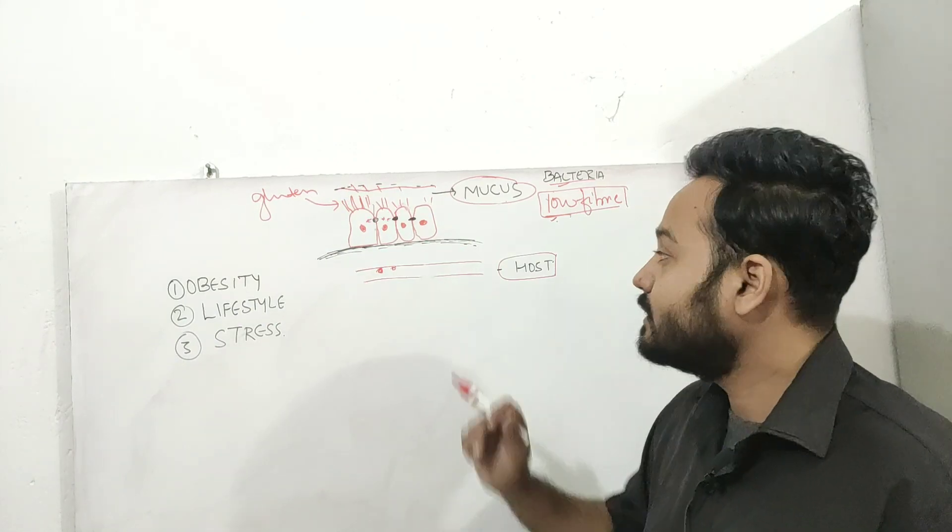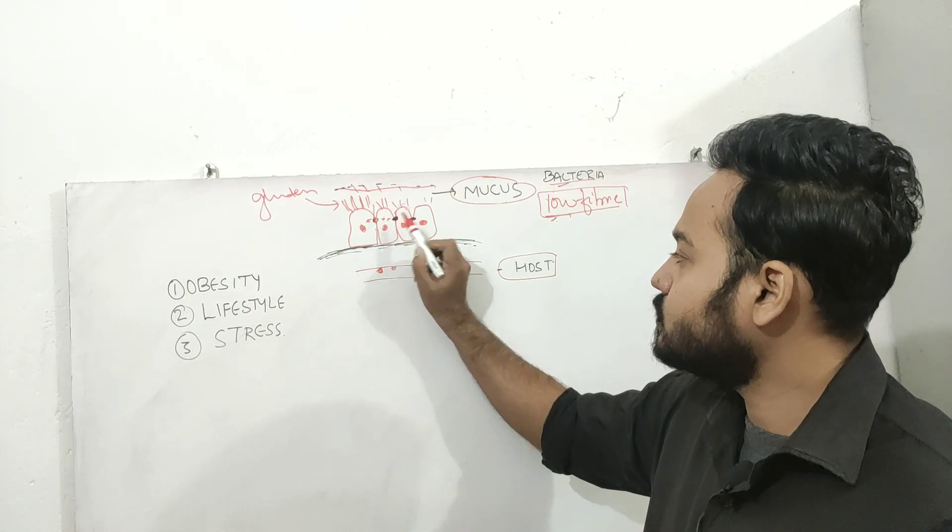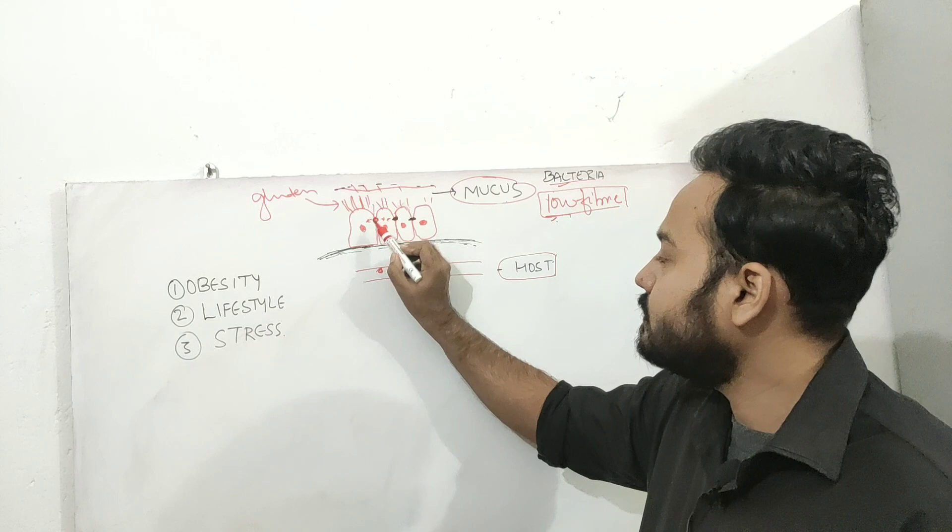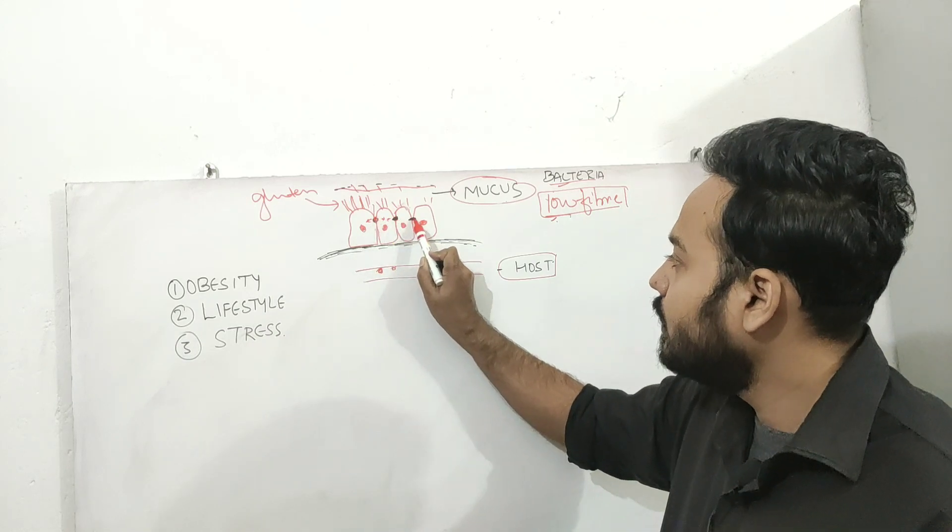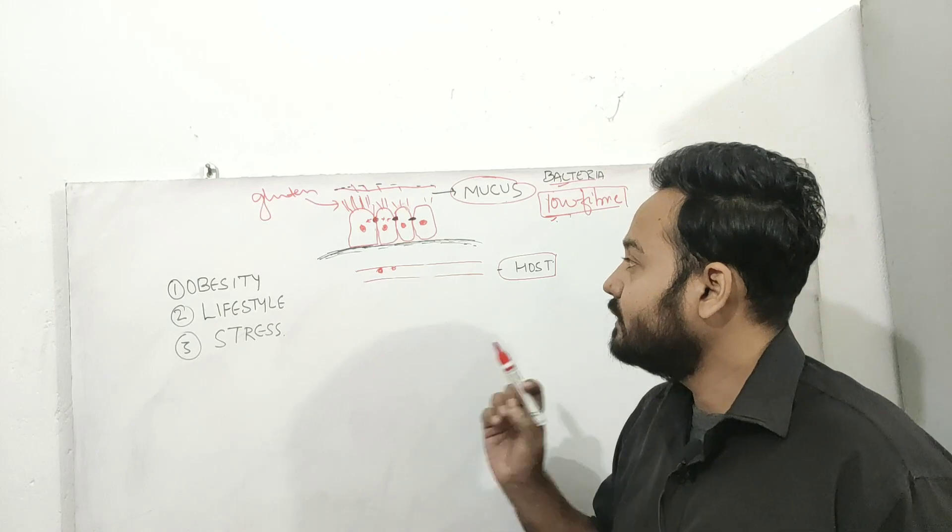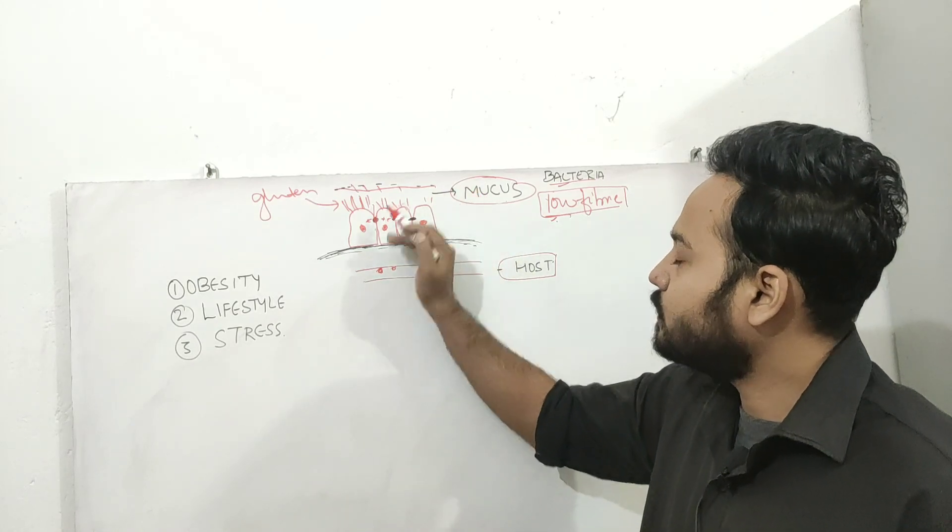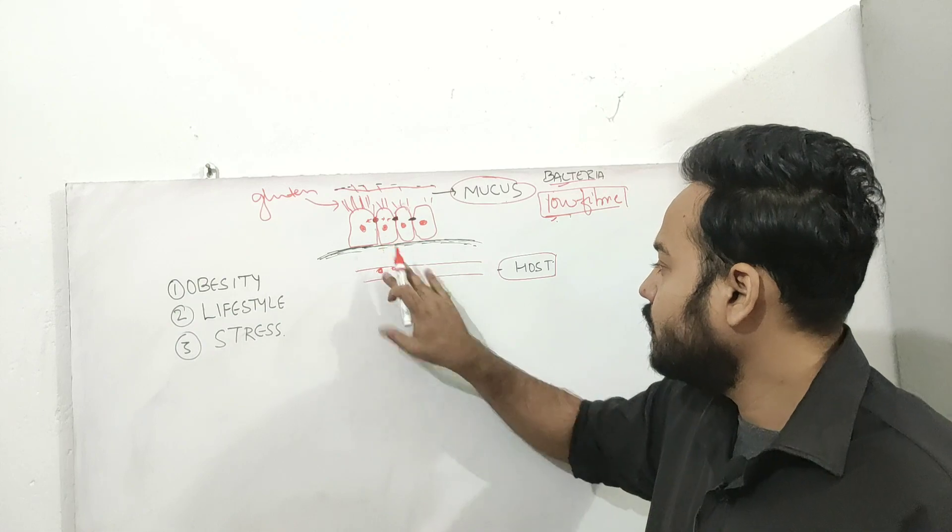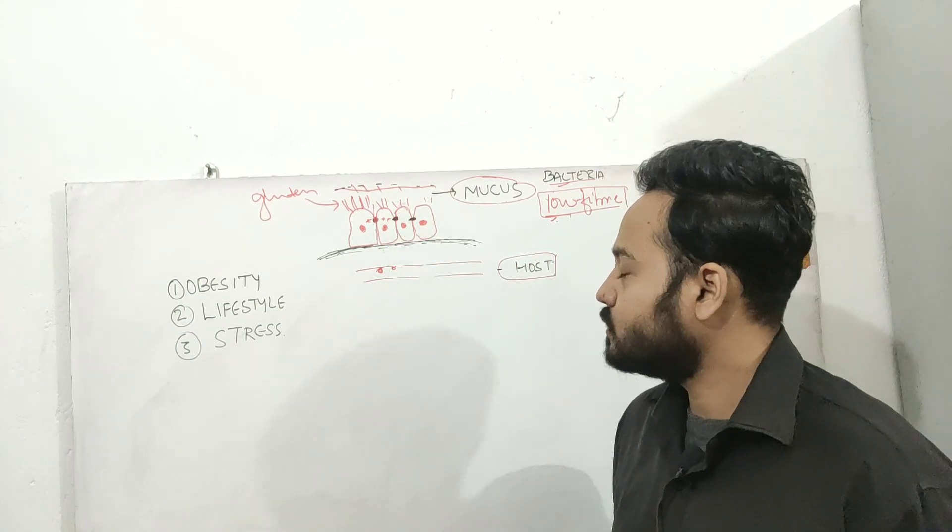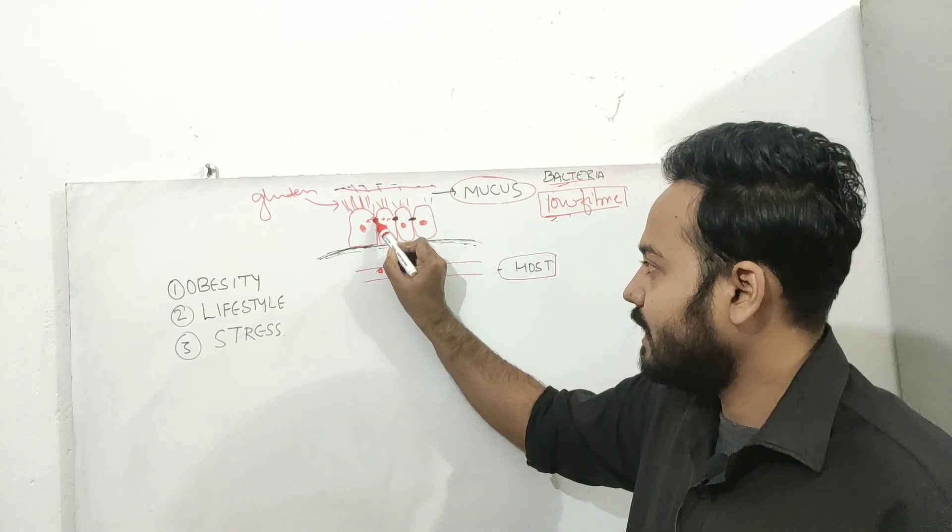And so third thing here is tight junctions. So these are tight junctions. These are nothing but proteins at the apex of the enterocytes. So they do not allow pathogens or toxins to seep into your blood. So these are very important. So how to keep this intact?